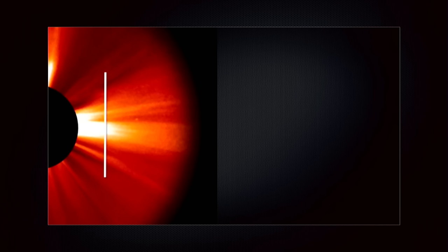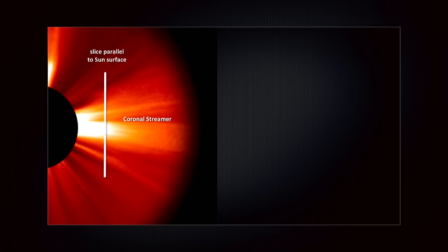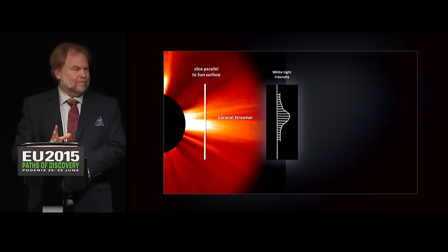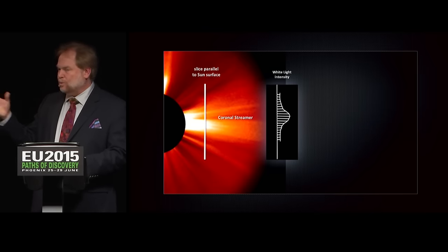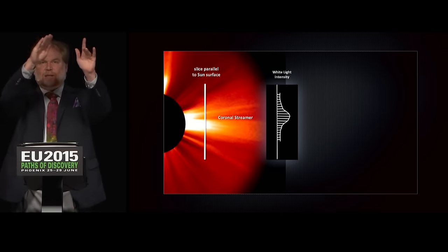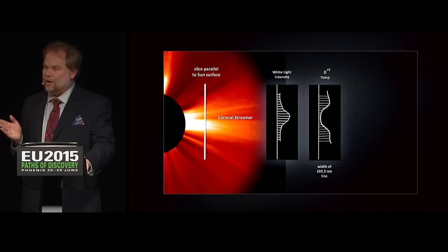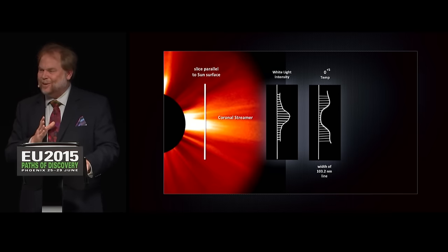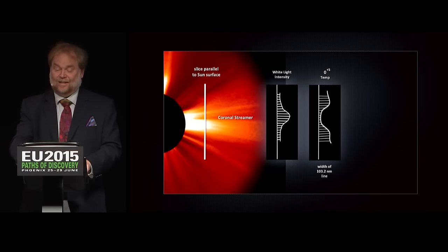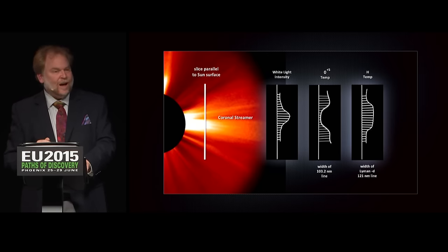It gets even better. Now they're going to look at the temperature profile as you cut across a single streamer — a slice perpendicular to the streamer, looking at oxygen and hydrogen. Here's a plot of intensity as you cut across: it makes sense — more intensity in the middle of the streamer. But when we look at the temperature of oxygen across the streamer, it is hotter outside the streamer, cools down inside the streamer, then gets hot again. Hydrogen is just the opposite — cooler outside, temperature goes up inside the streamer, then cold again on the other side. These were extremely strange results.